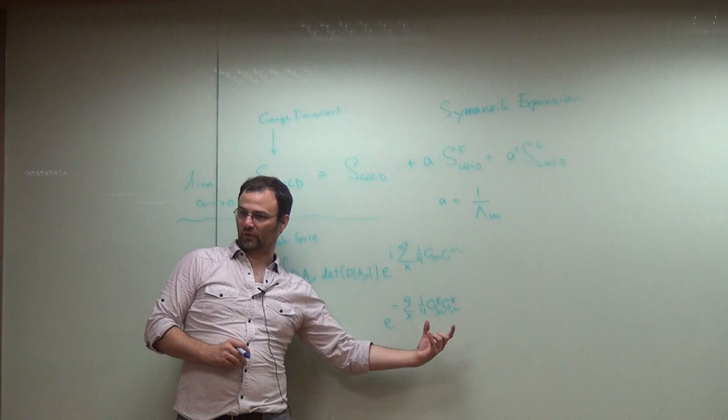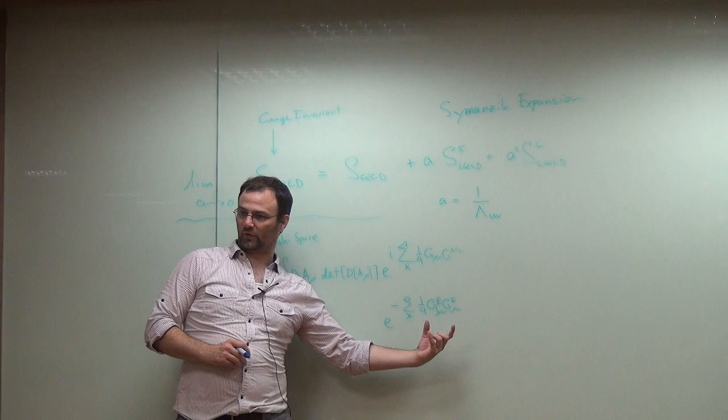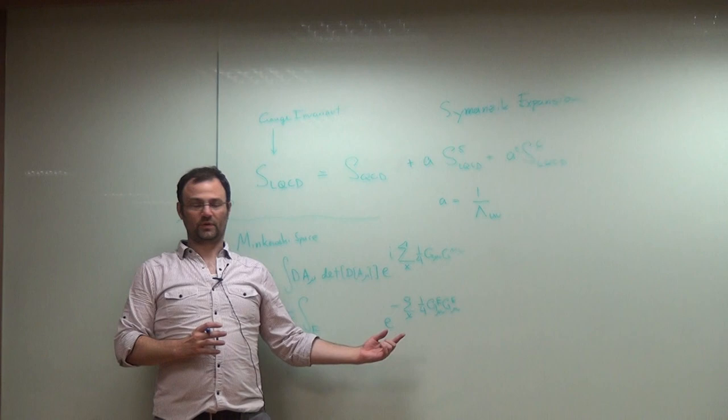And so now, as you pick values of the gauge field that make this large, these become unimportant, right? Because basically what you have is E to the minus S glue.